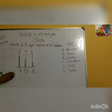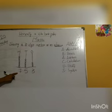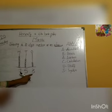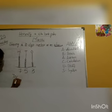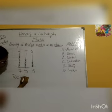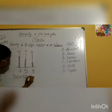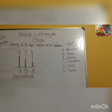So the digit comes, that is 753. You can also write it like this: 700 plus 50 plus 3. This is the expanded form of the digit.